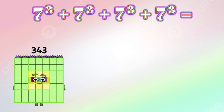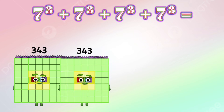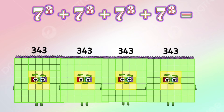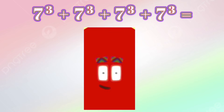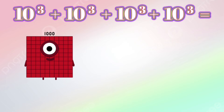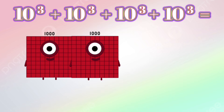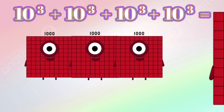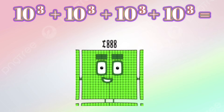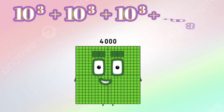7 cube plus 7 cube plus 7 cube plus 7 cube equals 1372. 10 cube plus 10 cube plus 10 cube plus 10 cube equals 4,000.